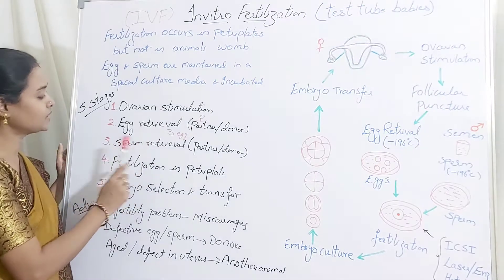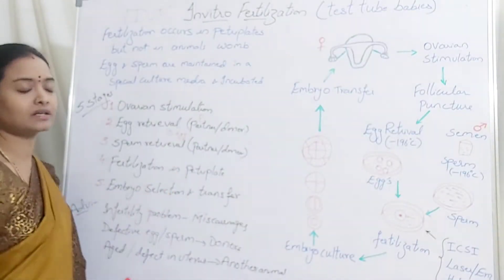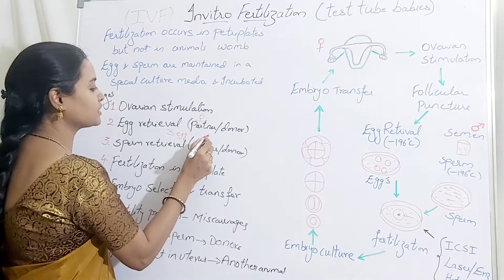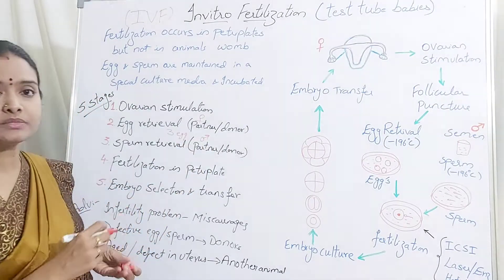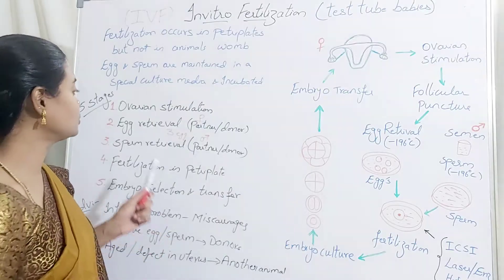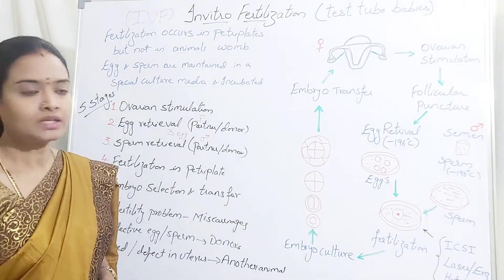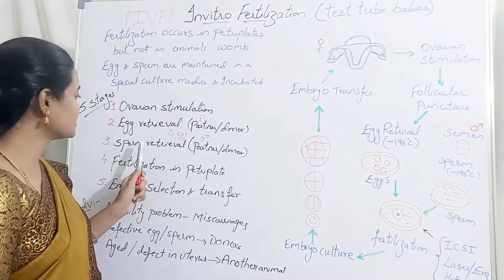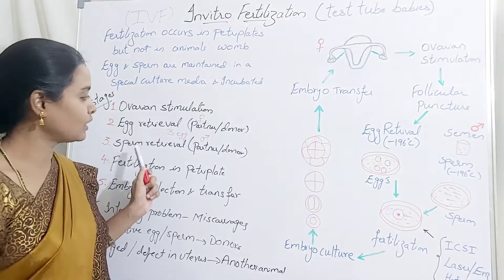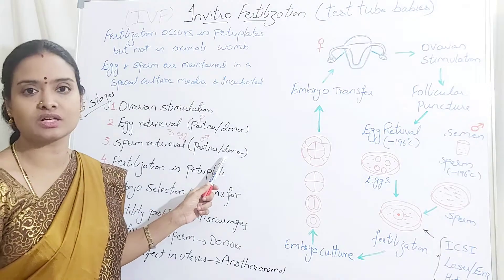The sperm or semen is collected from the male partner. From the semen, the active and motile sperms are separated. If there is some problem with sperm motility or quality, then they go for sperm donors.